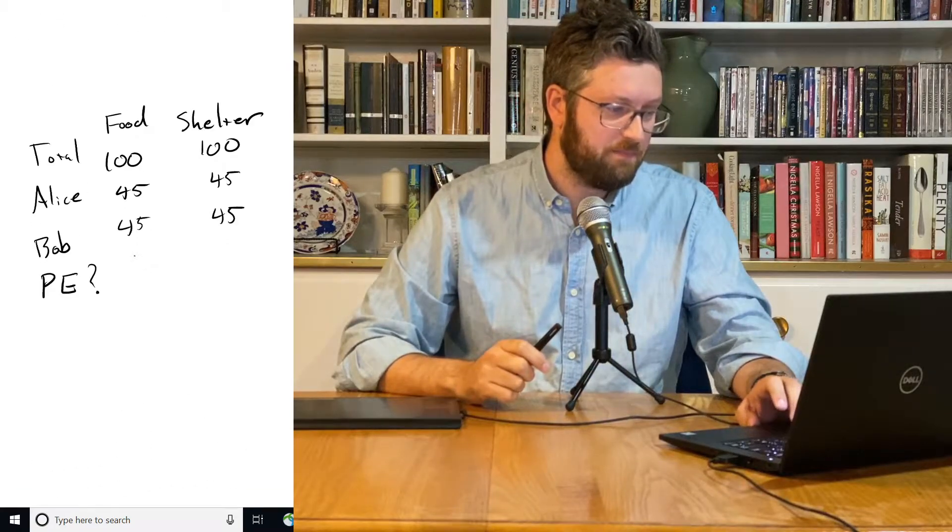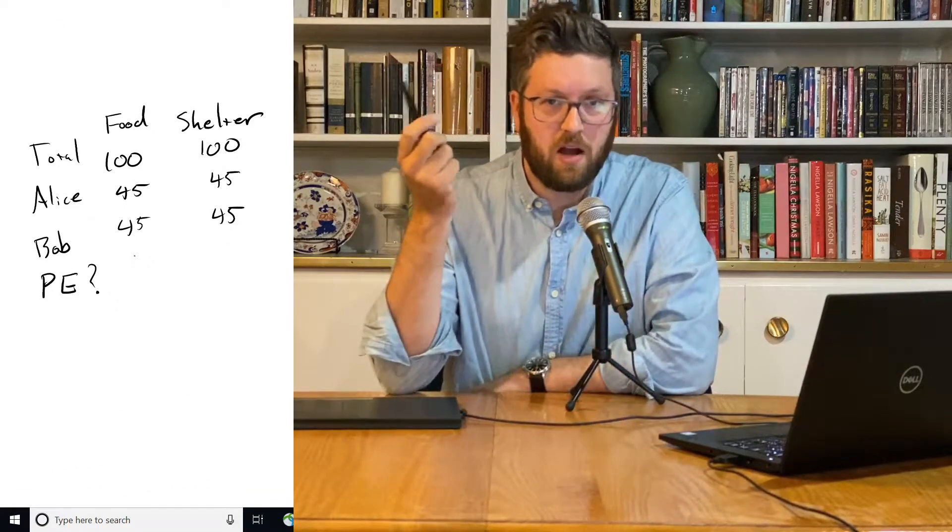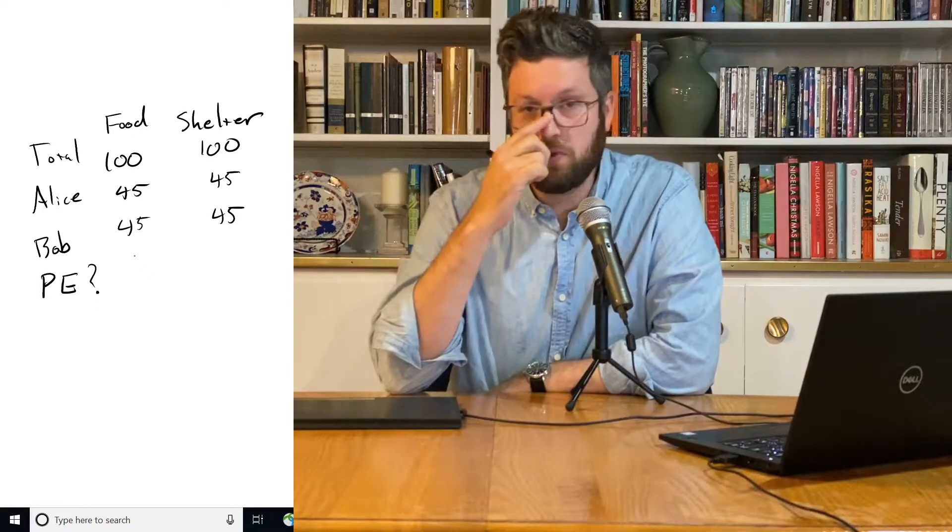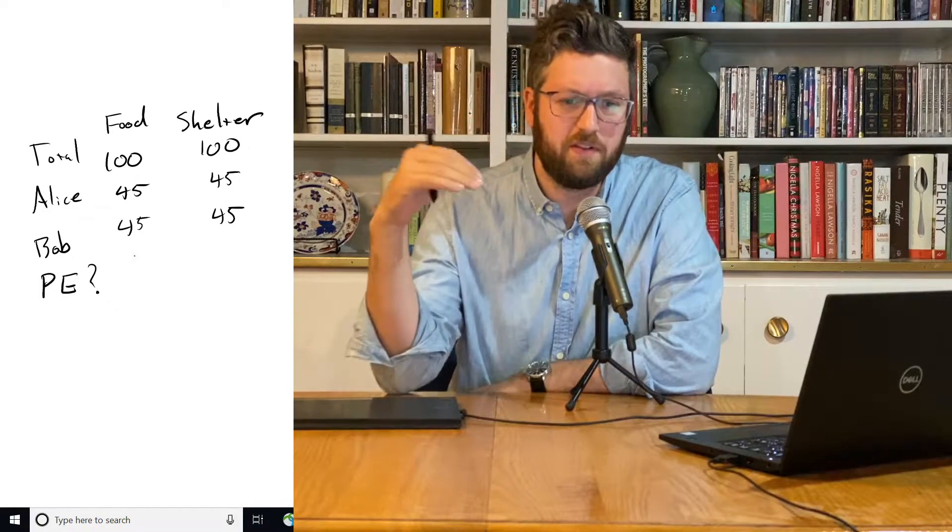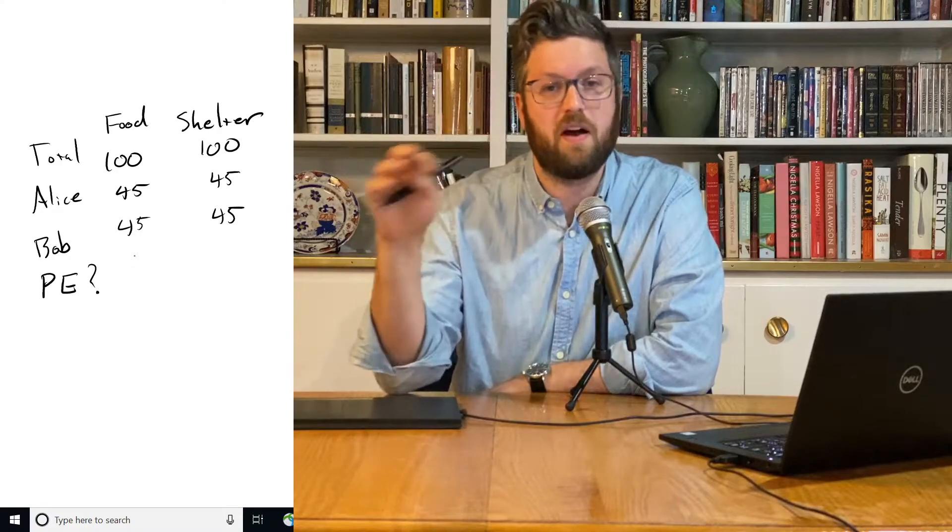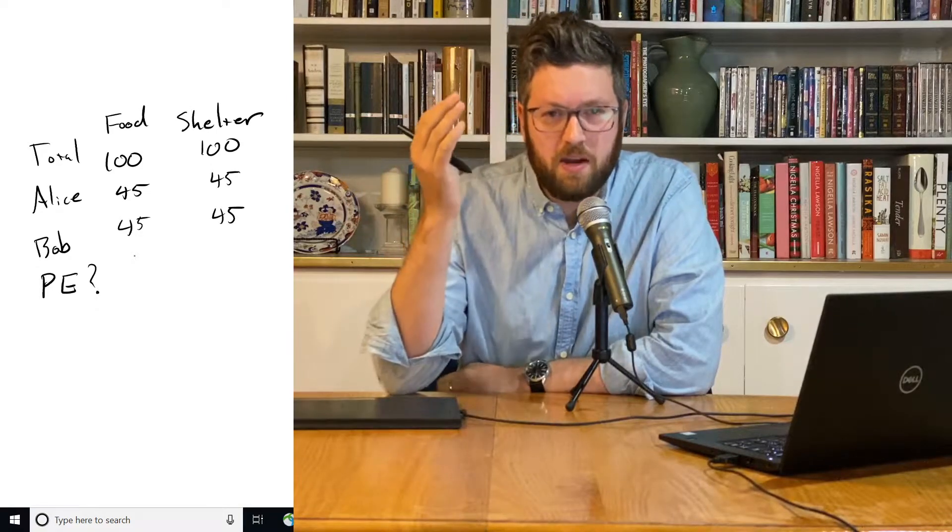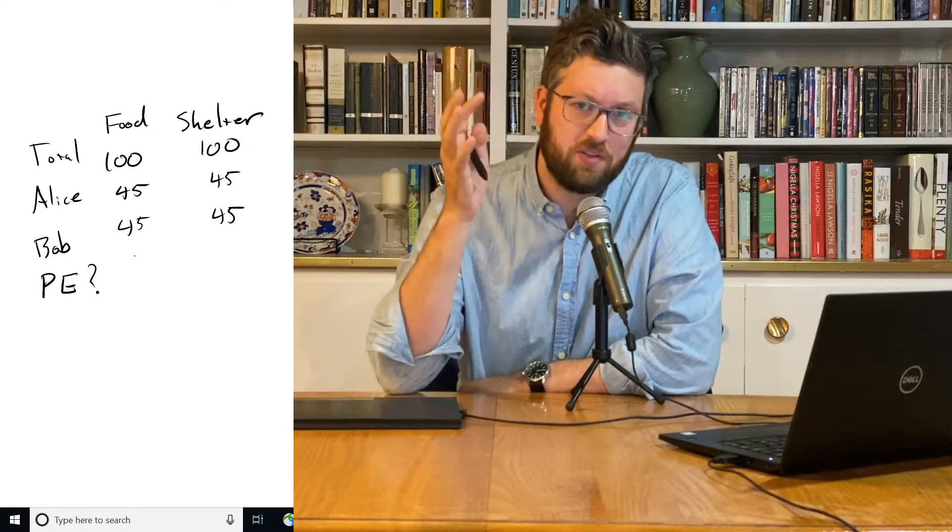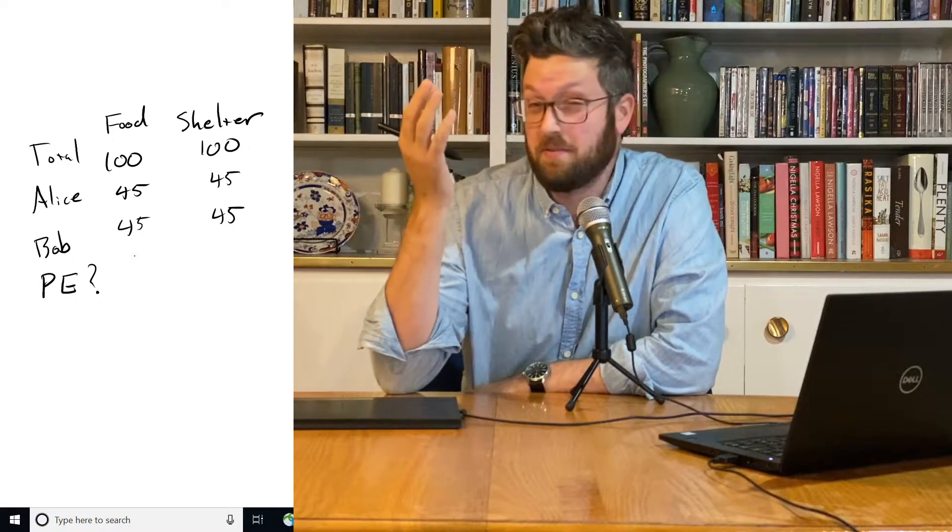Now let's look at this option. We've still got 100 total to allocate between them. We're still doing a 50-50 split, but now we're giving each of them 45 units. Can we make anyone better off without making the other worse off? Well, it seems to be, yeah, in this case.